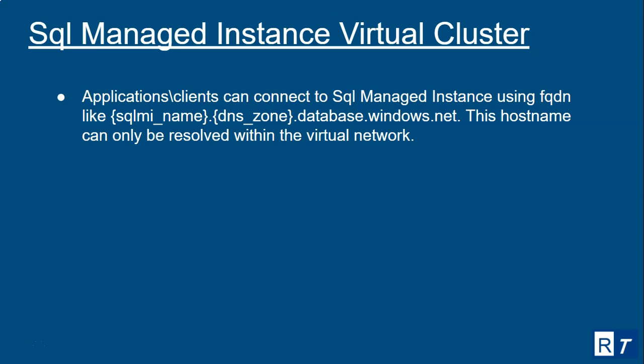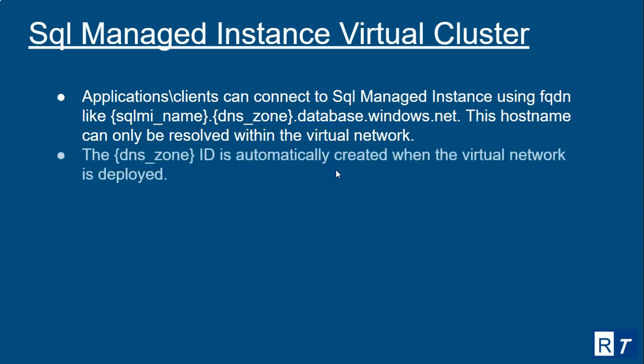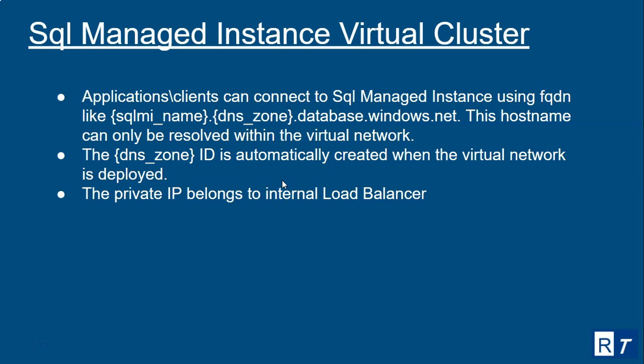Regarding the virtual cluster: application clients can connect to SQL Managed Instance using a fully qualified domain name. The FQDN structure is: SQL Managed Instance name, then the DNS zone, then database.windows.net. The hostname can only be resolved within the virtual network, and the DNS zone ID is automatically created when the virtual network is deployed.